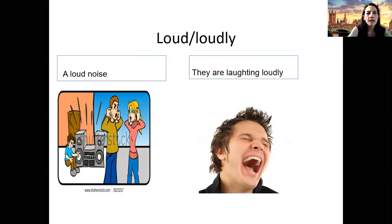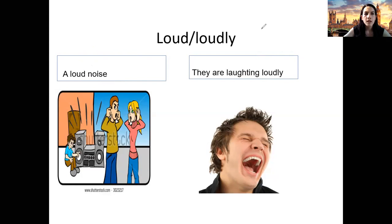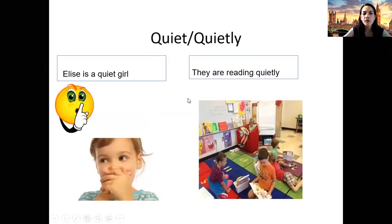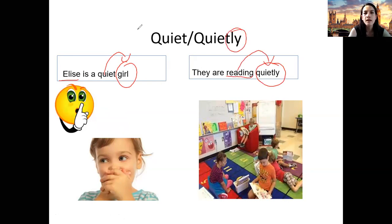Loud and loudly. 'It's a loud noise' — noise is a noun, so 'loud' is an adjective. 'They are laughing loudly' — how are they laughing? Laughing is the action. They are laughing loudly — I am describing the action. Quiet and quietly: 'Elise is a quiet girl' — I am describing Elise, who is a noun, so that's an adjective. 'They are reading quietly' — how are they reading? Quietly — that's an adverb, and also because it has '-ly.'